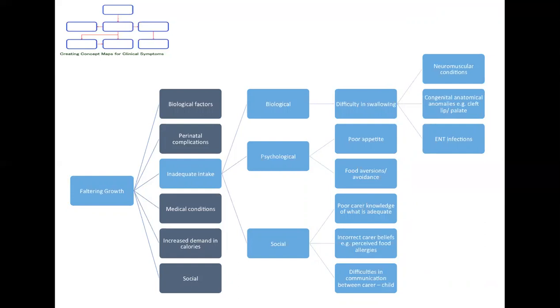For example, are they currently unwell, leading to poor appetite? Do they have a very strict preference for certain foods, avoiding certain colors, textures, smells, flavors, or shapes, as seen in food aversion or avoidance? And also social causes.